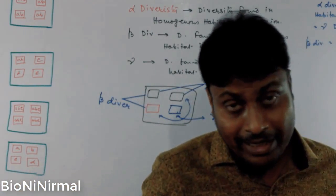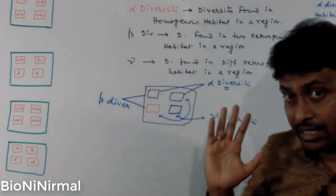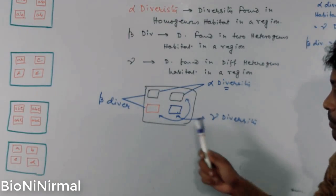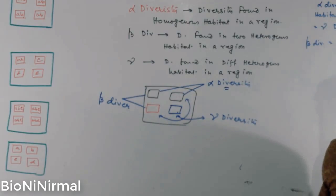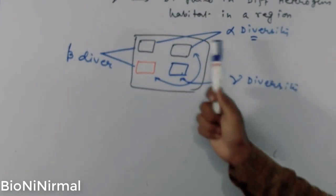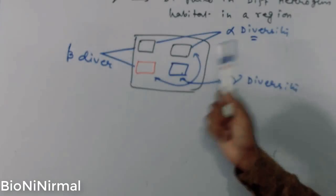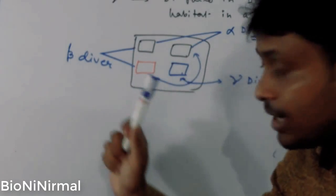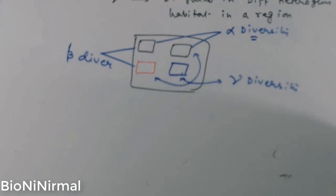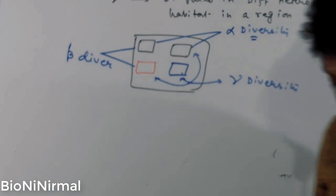So to summarize: in a region there may be various types of habitats — homogeneous or heterogeneous. The diversity found in homogeneous habitats is alpha diversity. The diversity found between two different heterogeneous habitats in a region is beta diversity. The diversity found across all different habitats in a region is gamma diversity.